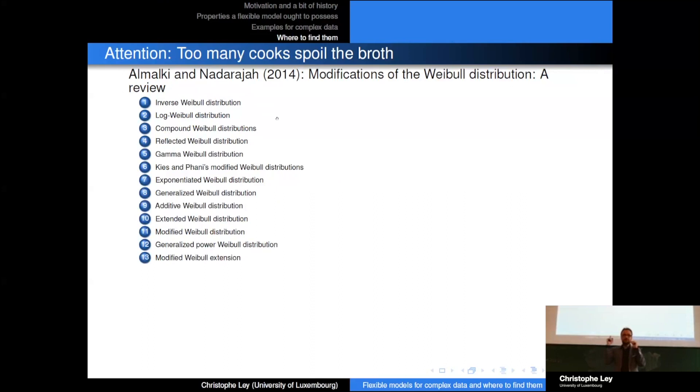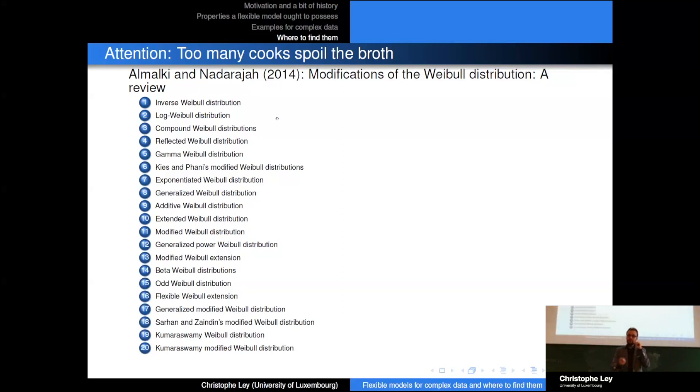The word generalized is already used, so let's take modified Weibull distribution. The generalized power Weibull distribution, the modified Weibull extension. Attention - number 11 is modified Weibull distribution, this is the modified Weibull extension, it's different. We have the beta Weibull distributions, we have the odd Weibull distribution, flexible Weibull extension, the generalized modified Weibull extension - so here we combine the generalized and the modified into the generalized modified Weibull distribution. We have Sağan and Zayindin's modified Weibull distribution, Kumaraswamy's modified Weibull distribution, and Almalki and Yuan's modified Weibull distribution. It is becoming very hard to follow up on all this, which is why general overview papers like this one are actually very useful. But also I think sometimes it's perhaps better to not just propose one more extension just for the sake of proposing extensions, because in the end you get lost in all this.